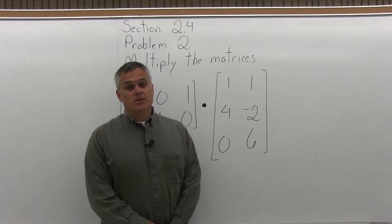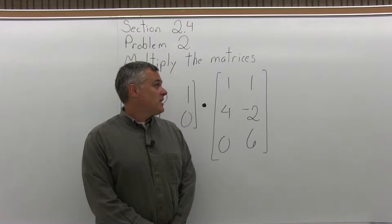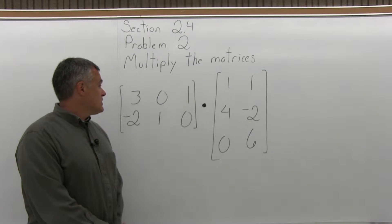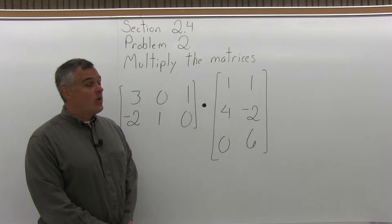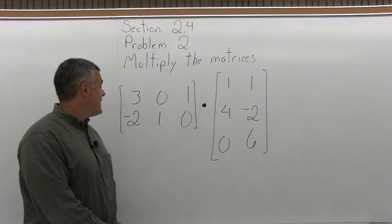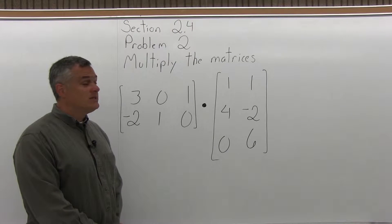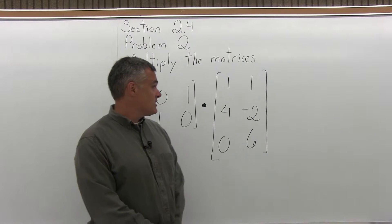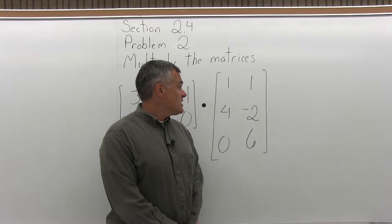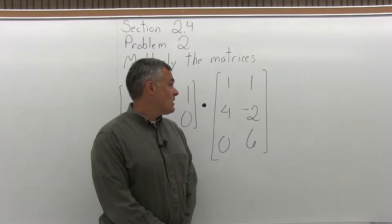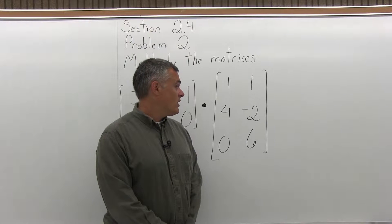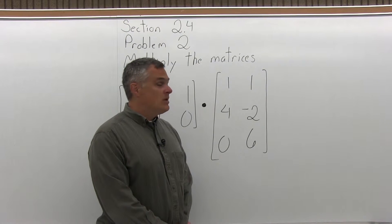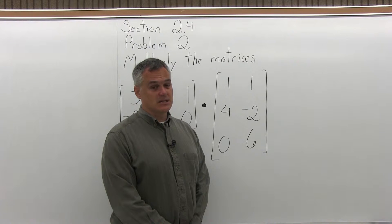This is problem number 2 from Section 2.4. Multiply the matrices. We have two matrices. The first one has 3, 0, 1 across the top row and then negative 2, 1, 0 on the bottom row. And we want to multiply that times the second matrix, which has a top row of 1 and then 1 again, a middle row of 4, negative 2, and then a bottom row of 0, 6.